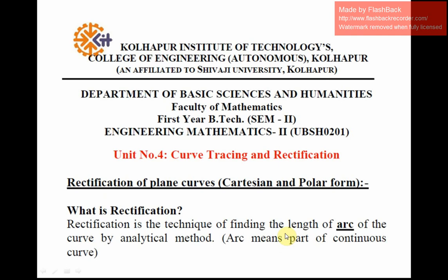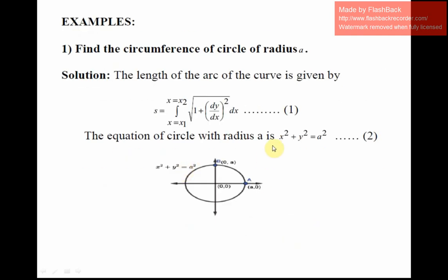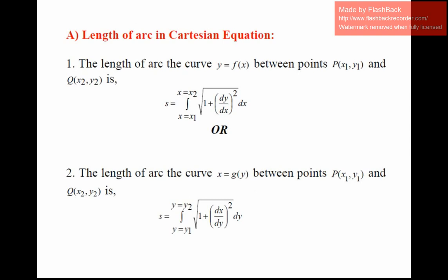We try to focus on what is the arc. For example, the equation of a circle is x squared plus y squared equals a squared, with center (0,0) and radius a. Points are (a,0) and (0,a). The arc, for example, is the length of the circle in the first quadrant — some part of the curve is called the arc. There are two parts: length of arc in Cartesian equation and length of arc in polar equation.